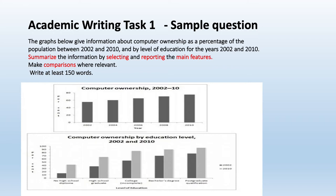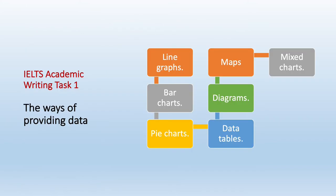IELTS Writing Task 1 is worth 33% of your total writing marks. You will be marked 25% on task achievement, 25% for coherence and cohesion, another 25% on vocabulary, and another 25% for grammar. The data provided for this task can be collected in different ways. It can be a line graph, bar chart, pie chart, table, diagram, map, or a mixed chart.